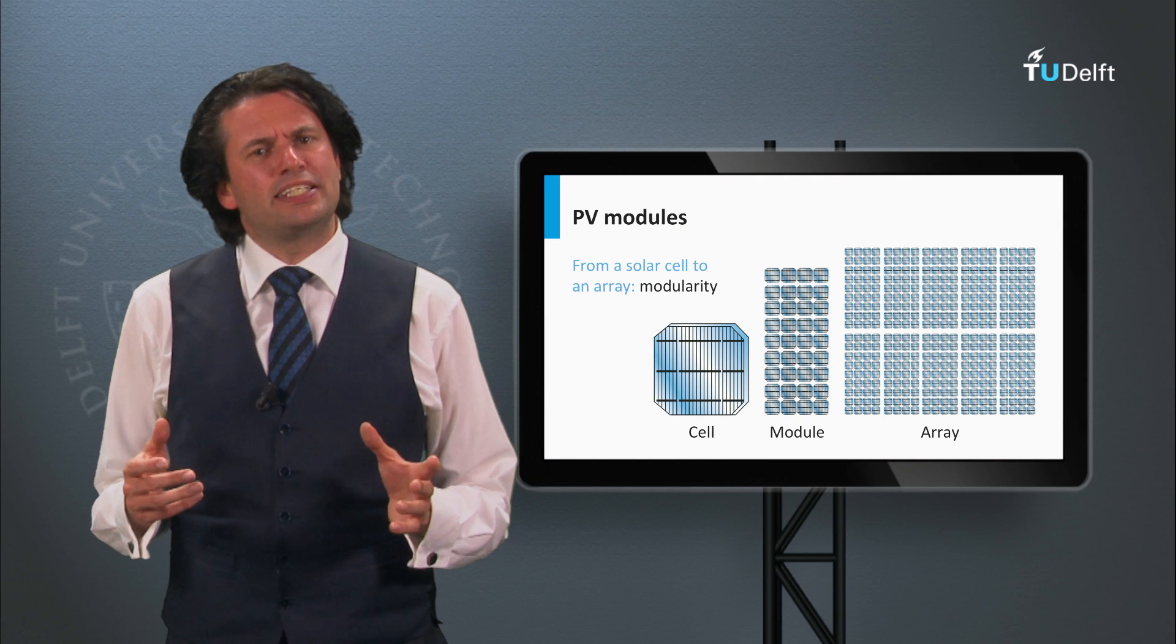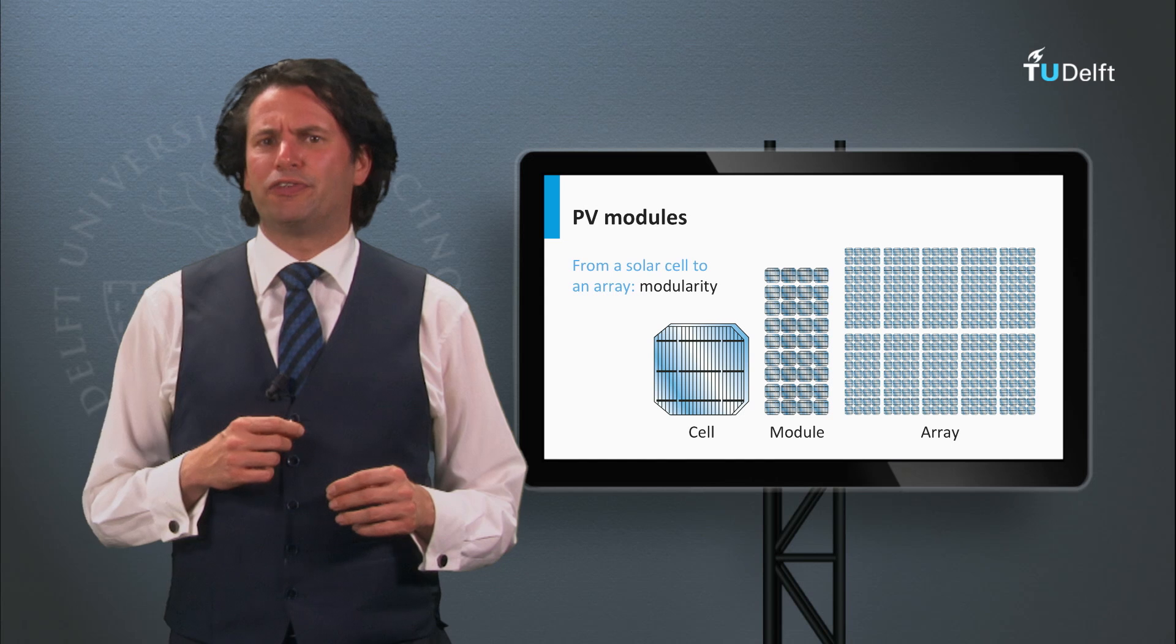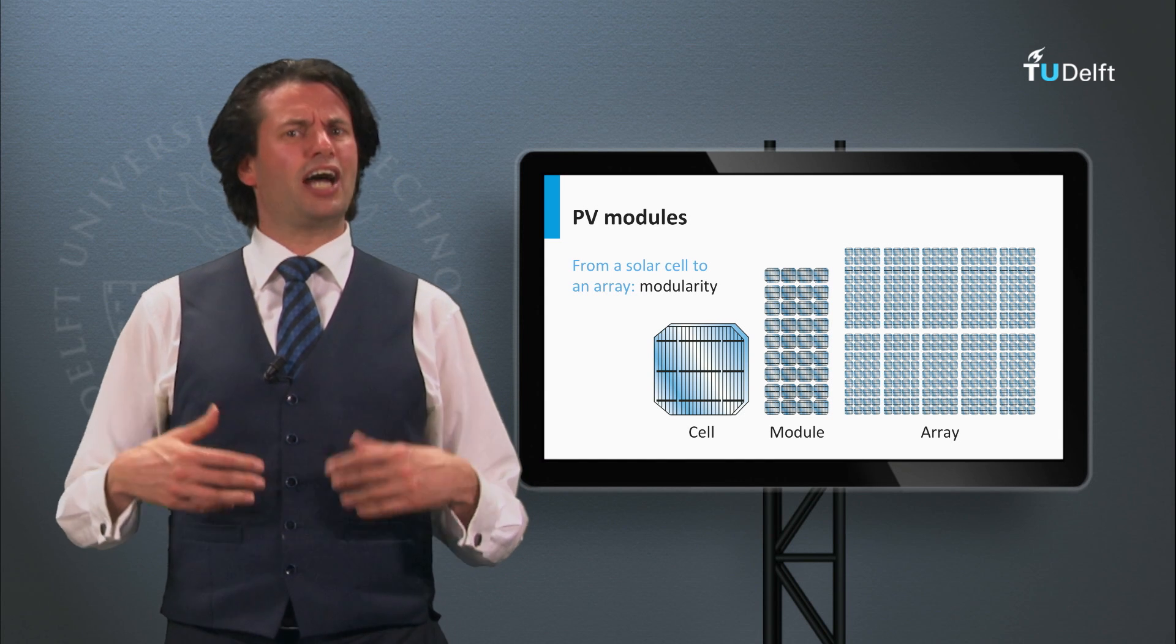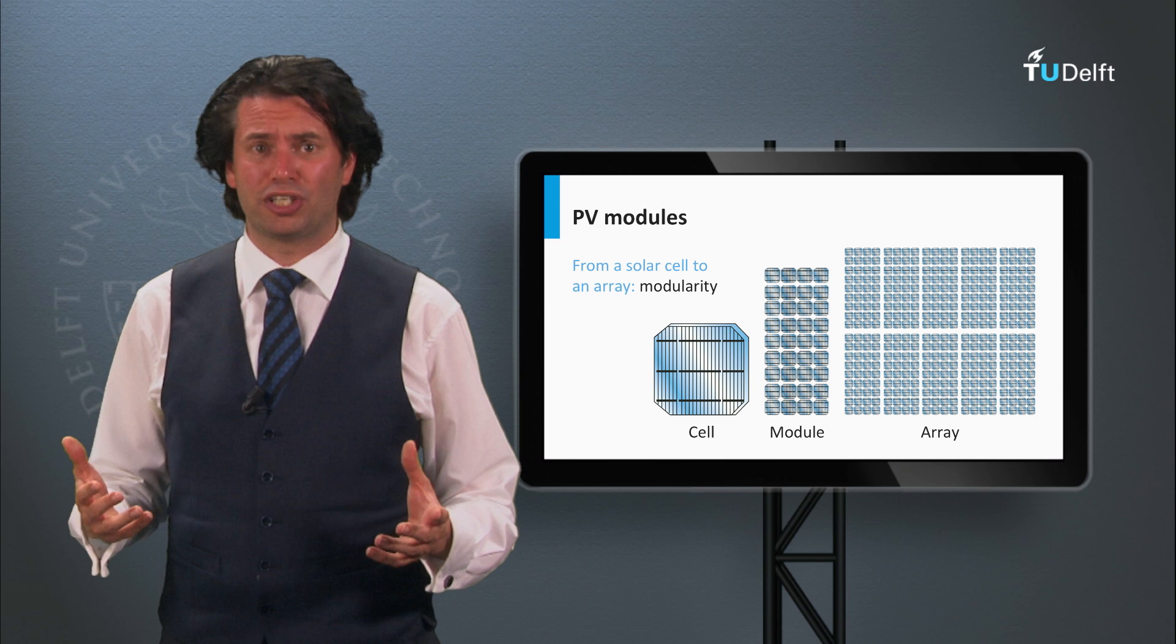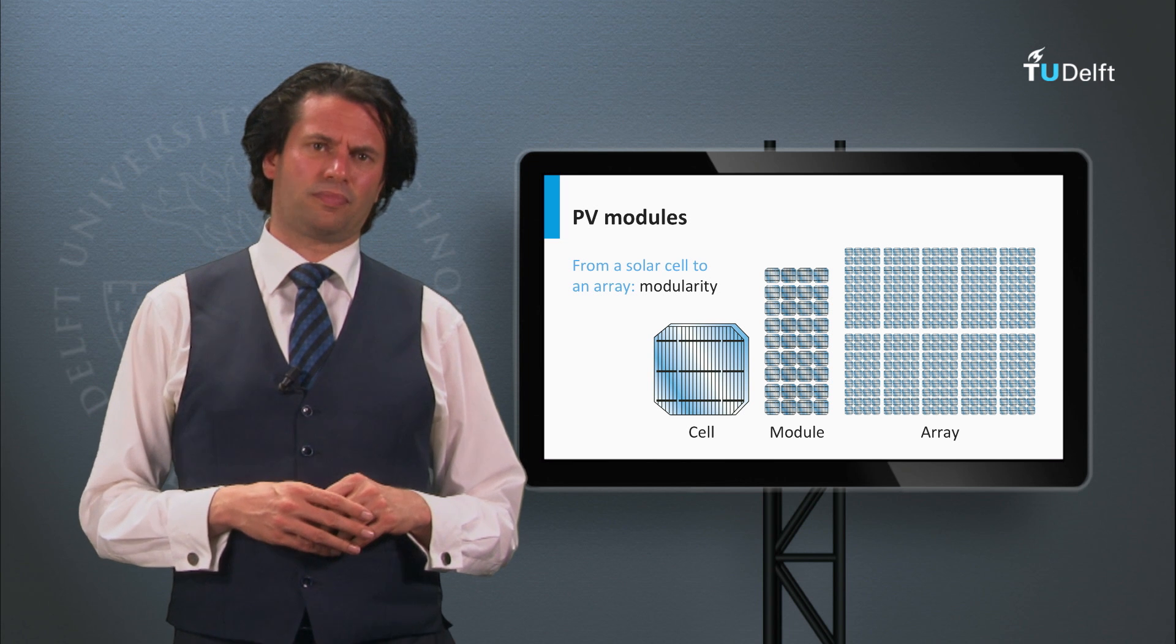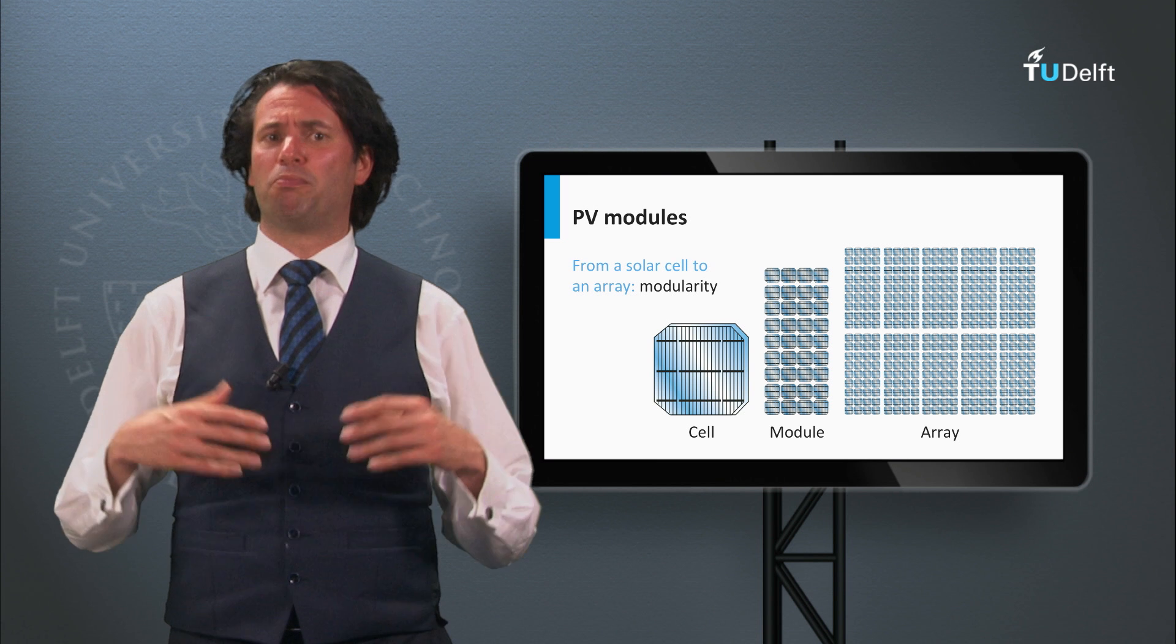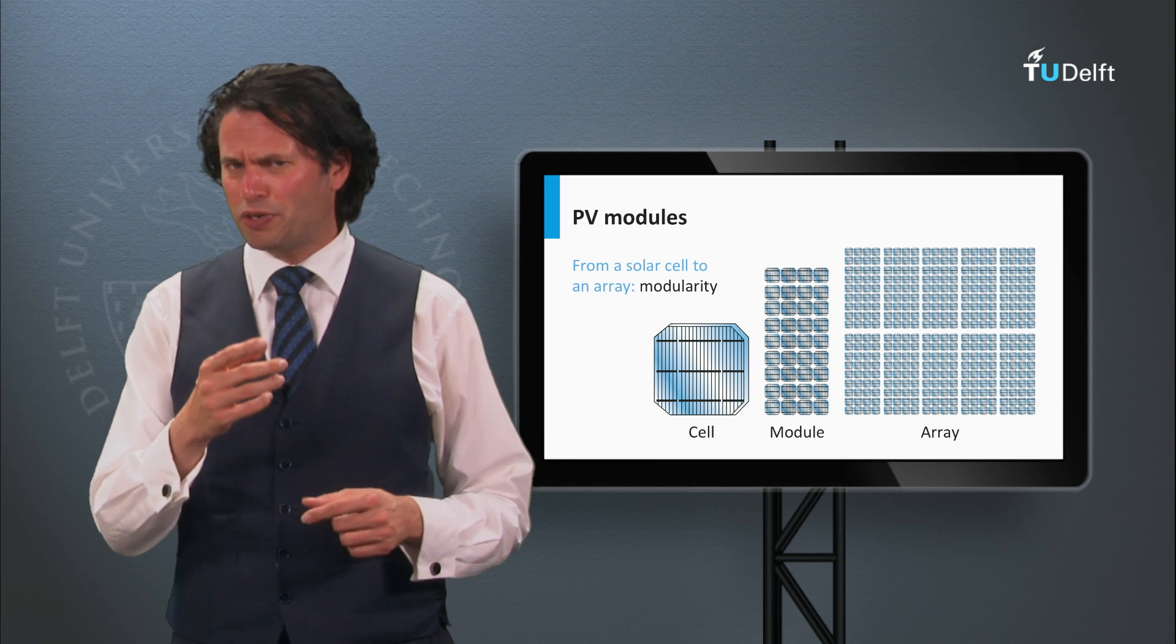A wafer-based device is usually referred to as a solar cell. A solar module is a large device in which many solar cells are connected. If we look at the level of a PV system, we can have several modules connected, and this is what we call an array.